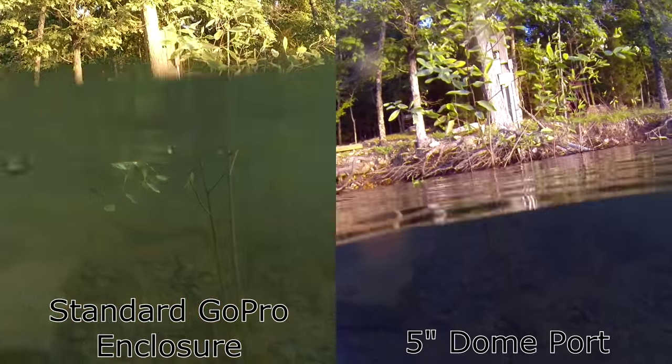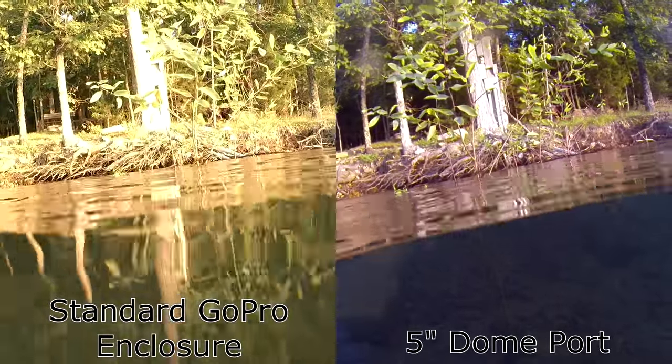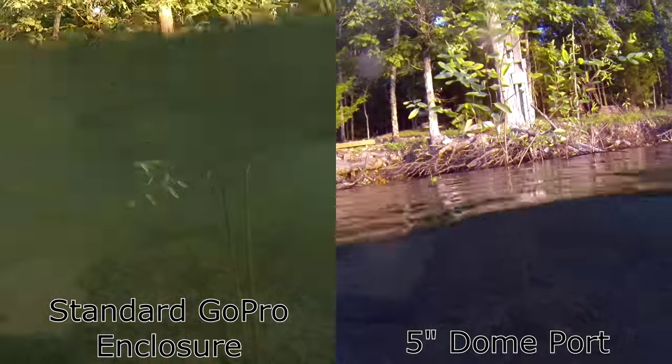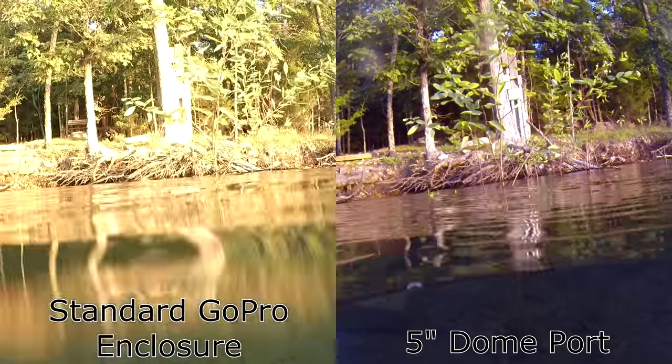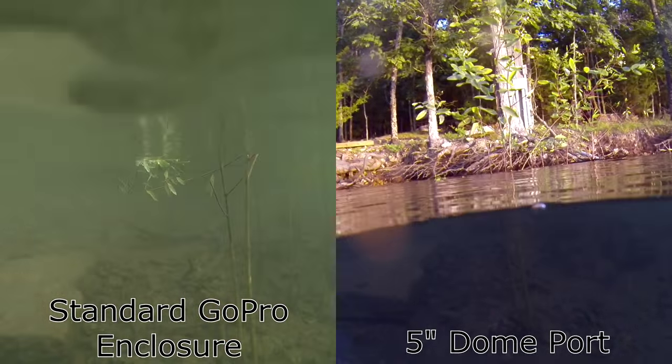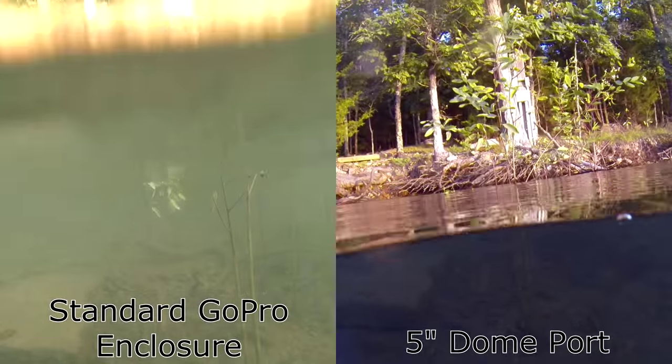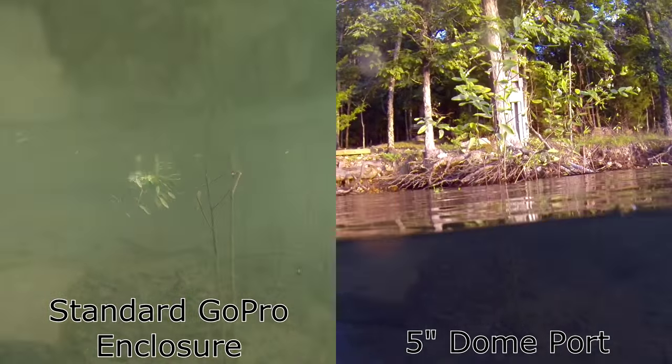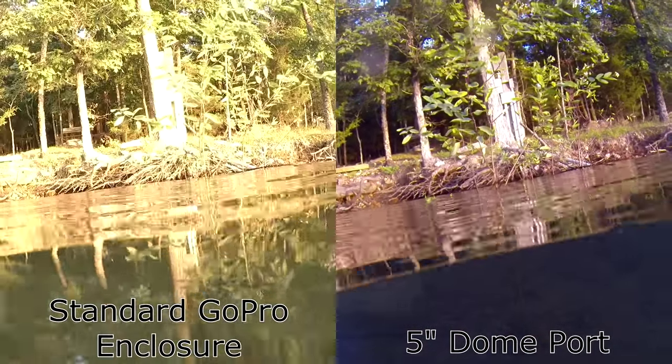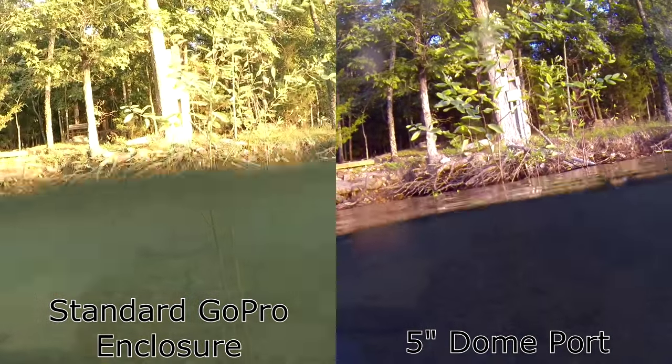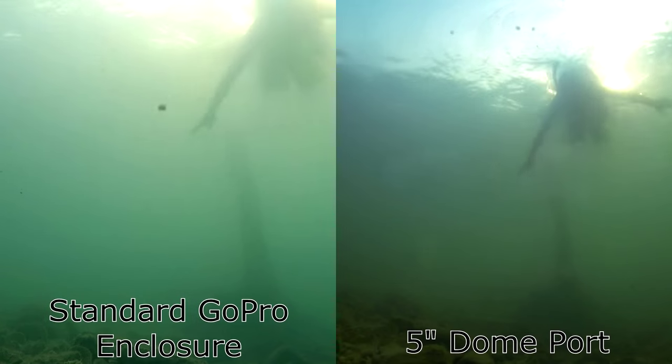So here you can see the standard GoPro enclosure on the left and the 5 inch dome port on the right. This is 50-50 shots and you can see how hard it is to get that straight line to stay stationary with the standard enclosure. That's because the water is just right up against the lens. The dome port keeps the water further away from the lens so it's easier to do.